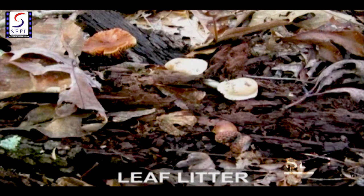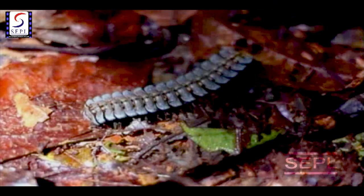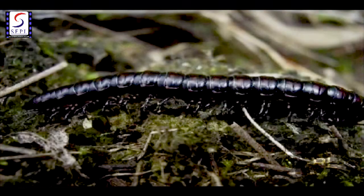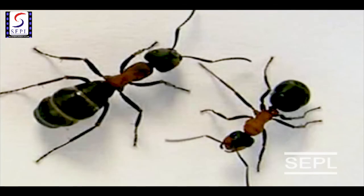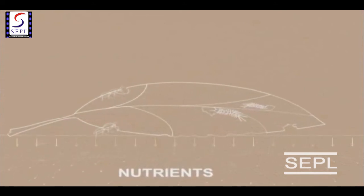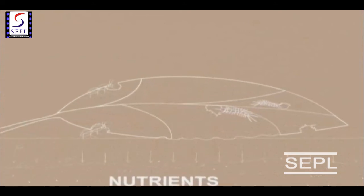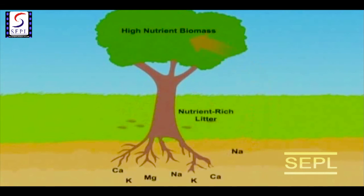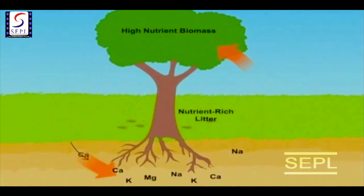Inside and beneath this leaf litter, thousands of small animals live, including many invertebrates like beetles, millipedes, centipedes and ants. Unseen microscopic creatures such as fungi and bacteria live there too. All these organisms help break the leaf litter into nutrients other plants and animals can use. In this manner, they return the nutrients back into the soil.